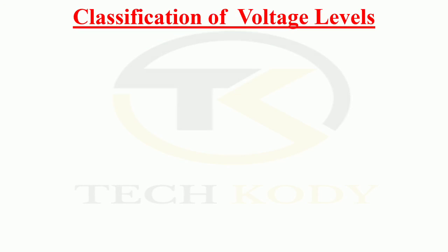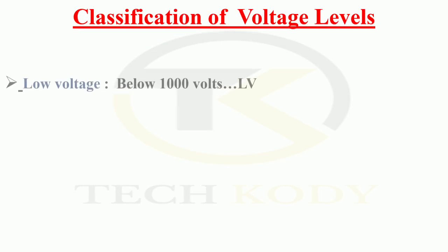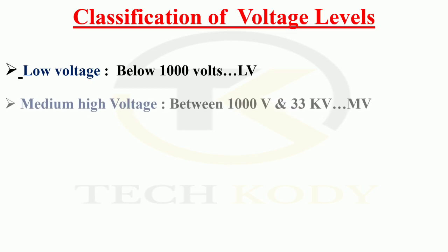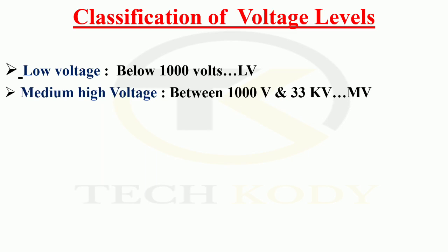Classification of voltages: generally the voltage is classified as LV, means low voltage — that is below 1000 volts, is called low voltage. Medium voltage, between 1000 volts up to 33 kV, we call it as medium voltage.